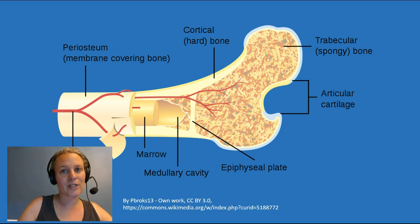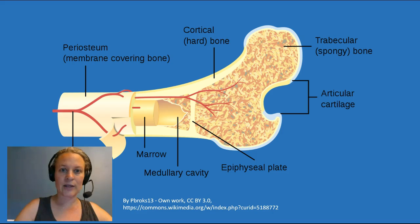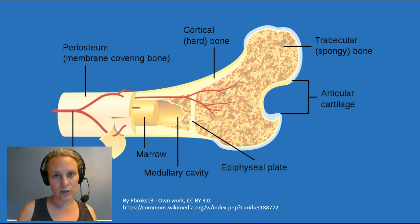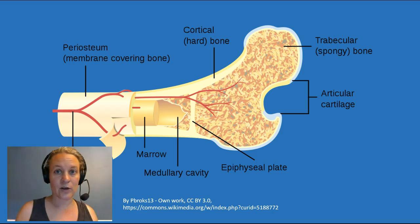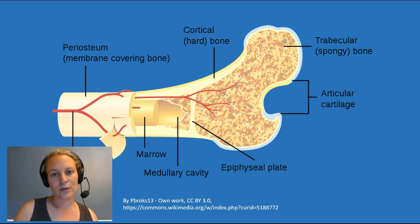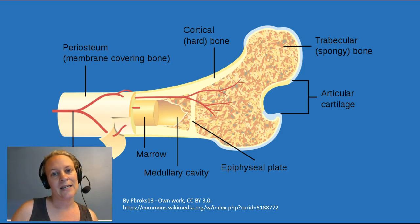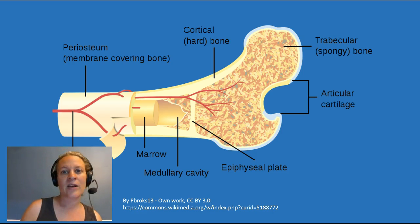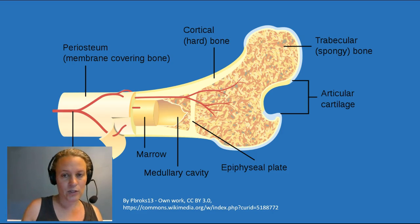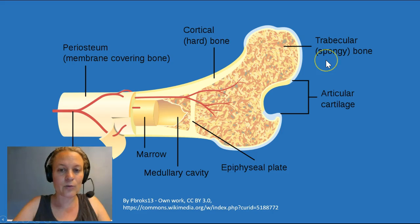When we're born, most of our bones have red marrow. However, as we grow, especially in the long bones, that red marrow is replaced by yellow marrow. By the time we're adults, we only have a small handful of bones with red marrow that are producing all of our red blood cells. Those include the ribs, the bodies of the vertebrae, the cranium, the sternum, and a few others.